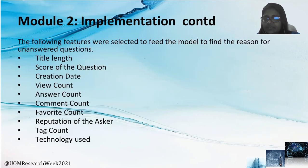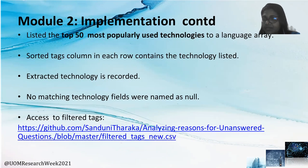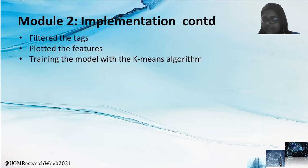The following features were selected to feed the module to find the reason for unanswered questions. This algorithm is used to filter out terms from the question title of each question. The top 50 most popular used technologies of each question were listed, and the language array of the tag column in each row containing the technology was sorted. Extracted technology is recorded. Then the features were plotted against each other to find whether a correlation exists between them. The module was then trained using the k-means clustering algorithm.